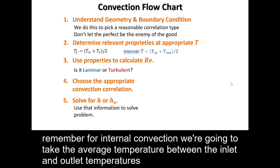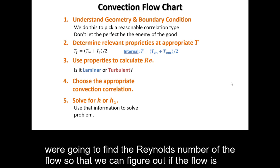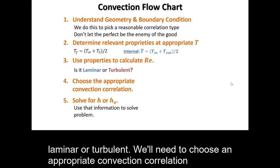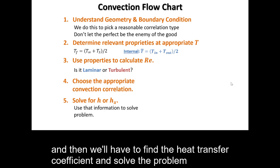Remember for internal convection, we're going to take the average temperature between the inlet and outlet temperatures. We're going to find the Reynolds number of the flow so that we can figure out if the flow is laminar or turbulent. We'll need to choose an appropriate convection correlation and then we'll have to find the heat transfer coefficient and solve the problem.